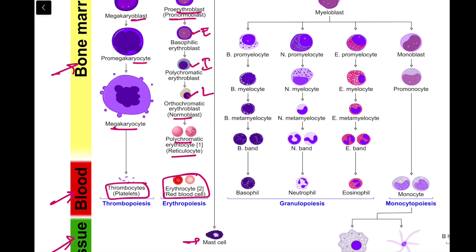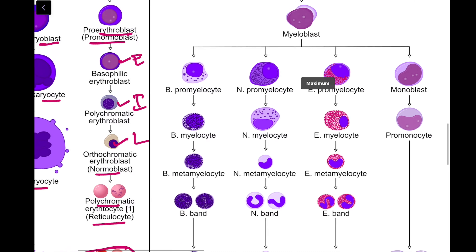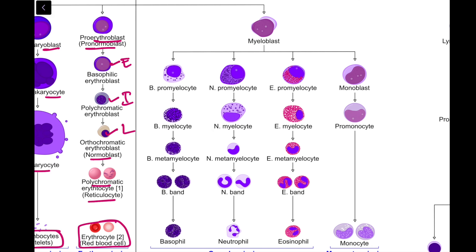Moving on to granulocyte formation, we have three types: basophils, neutrophils, and eosinophils. Each of these cells develops from the myeloblast stage, which progresses through the promyelocyte, myelocyte, metamyelocyte, and band forms. These are the same stages for each of the three cell types. They develop in the bone marrow and finally give rise to basophils, neutrophils, and eosinophils in the peripheral blood.